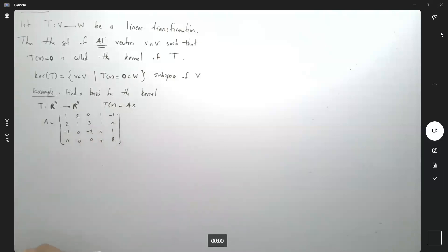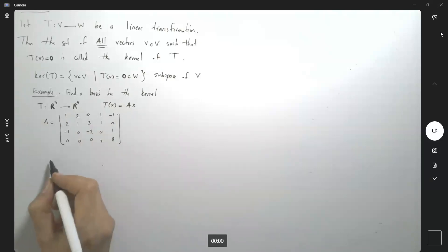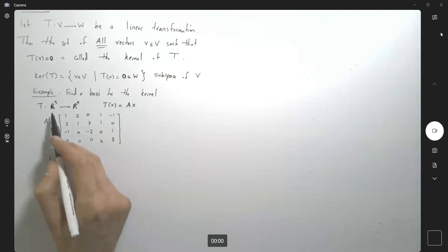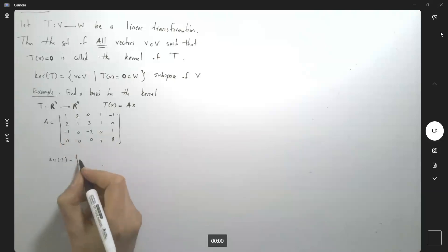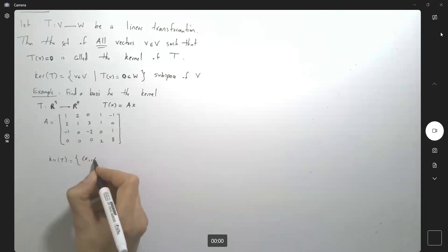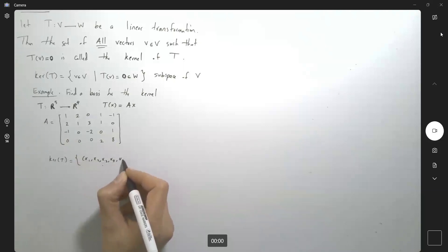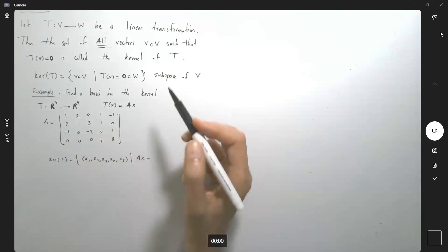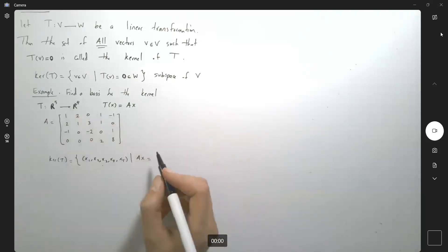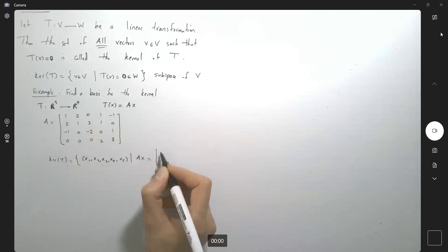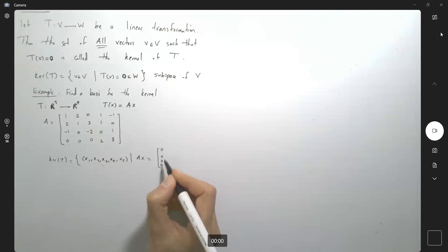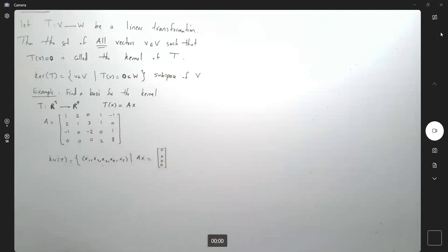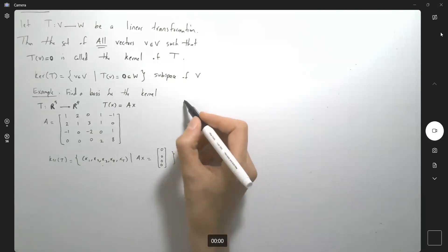First of all, what is the kernel? After we find the kernel, we can talk about the basis for the kernel. The kernel of T is the set of all vectors in R5 — x1, x2, x3, x4, and x5 — such that Ax equals the zero vector in R4, which is 0, 0, 0, 0. We need to solve this system. We can form an augmented matrix to make computation easier.